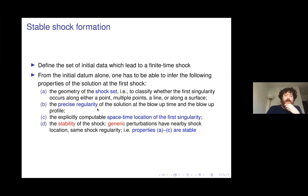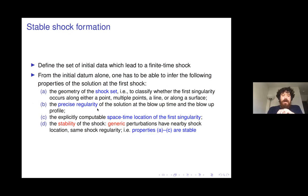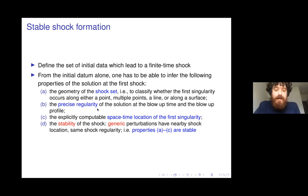What do I mean by stable shock formation? We define an open set of initial data, from which one must infer the geometry of the shock set — whether it's a point, multiple points, a line, a surface — the precise regularity at blow-up, the profile, and the space-time location of the singularity. It should be stable in the sense that any generic perturbation leads to the same type of shock forming, which is guaranteed by defining an open set of initial data within an appropriate topology.